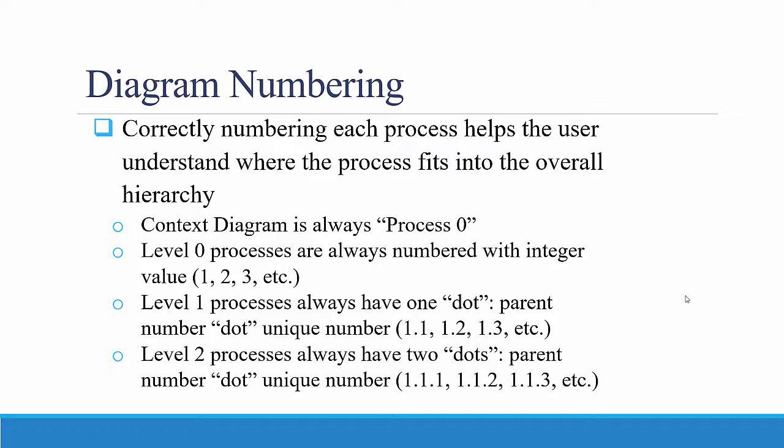There is a particular data diagram numbering protocol that helps the viewer, the user, understand what level you're at and what process you're talking about. Correctly numbering each process using this specific numbering scheme among the different levels helps the user understand where the process fits into the overall hierarchy.